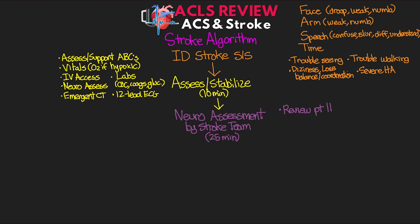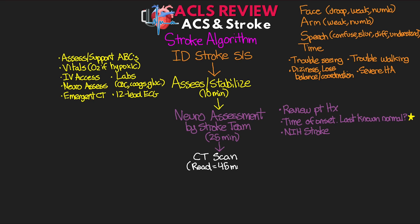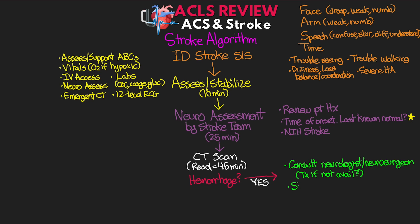At this point we're reviewing the patient's history, establishing the time of onset of symptoms — or really the last known time they were normal — which is going to be key further along in the algorithm. We also want to perform the NIH stroke scale, which I'll cover in a future video. Now it's off to CT, and we want the results read no later than 45 minutes from the start. We're primarily looking to see if there is hemorrhage. If the patient has a hemorrhagic stroke, a neurologist or neurosurgeon will be consulted, and we want to consider transferring them to a different facility if that's not available. We then begin the hemorrhagic pathway and admit them to a stroke unit or ICU, and all of this should happen within the first 60 minutes.